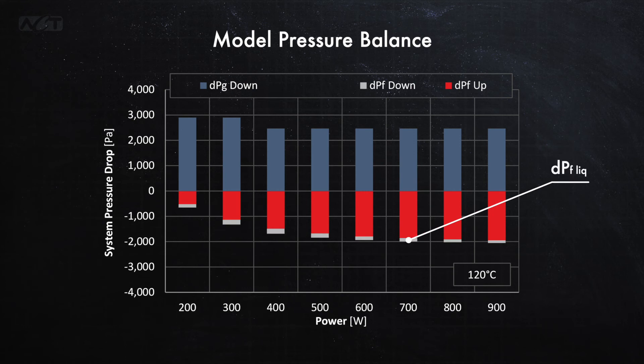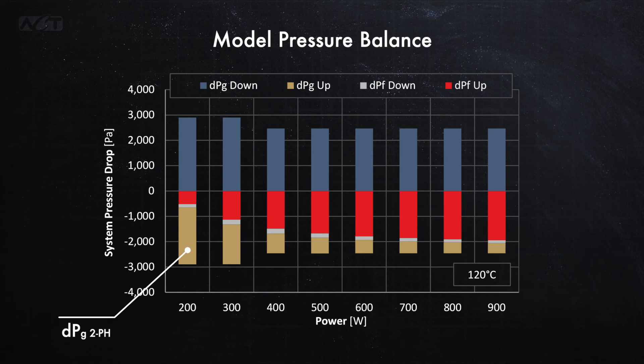The second frictional pressure drop is in the liquid portion of the loop. As expected, this is a very small contributor. And finally, we have the gravitational head of the two-phase flow.